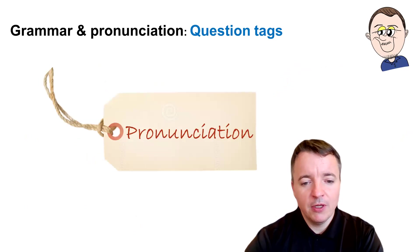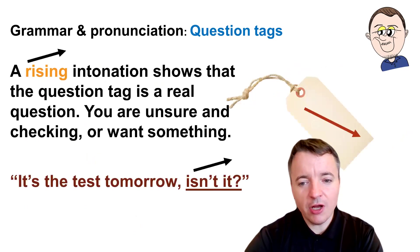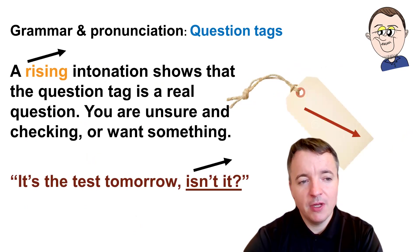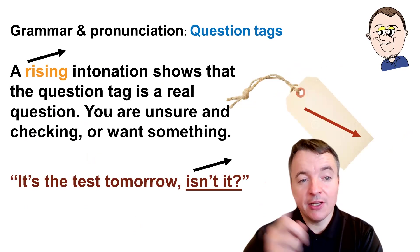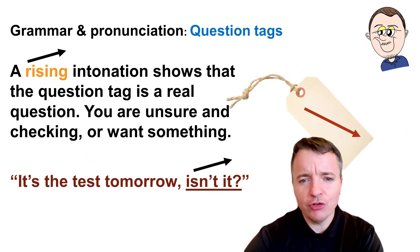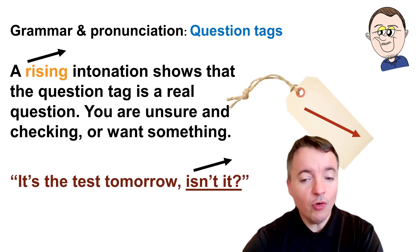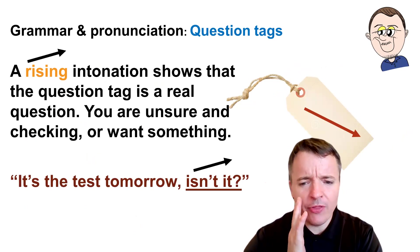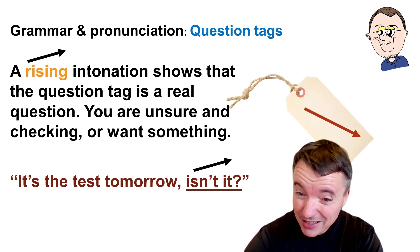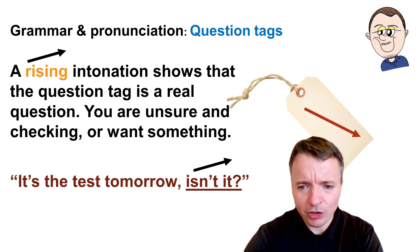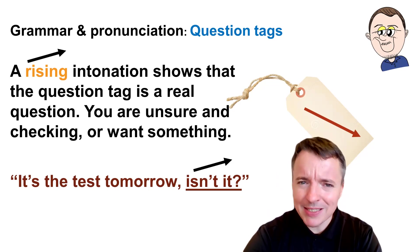Pronunciation — one simple pronunciation tip. We use a rising intonation. A rising intonation shows that the question tag is a real question — you're unsure of the answer and you're checking, or you're asking for something. For example: It's the test tomorrow, isn't it? — you're not sure, you're checking.